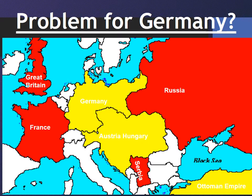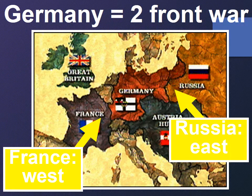So is this a problem for Germany? Pretty much, because you can see right here Germany is centered right in the middle of all the drama. Germany had a two-front war — on one side they had Russia to the east, and then France to their west. They were right in the middle.